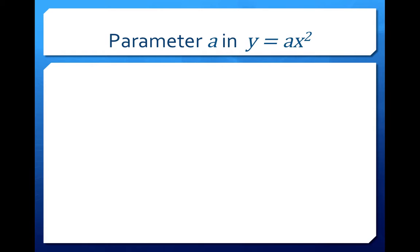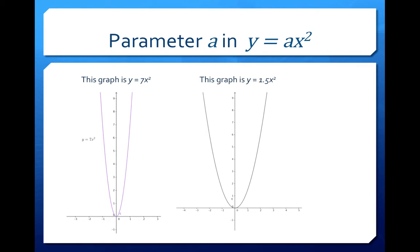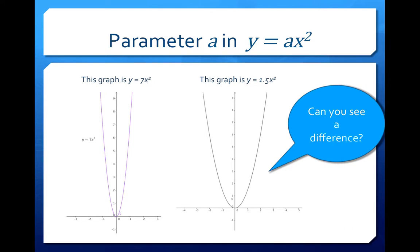Let's talk about what a in y equals ax squared even means. So here is this graph, and its rule is y equals 7x squared. So in this case, a is 7. Here is another graph. It is y equals 1.5x squared. So in this case, a is equal to 1.5.